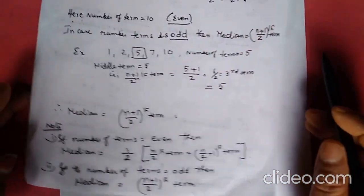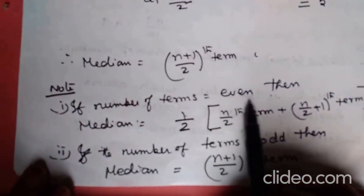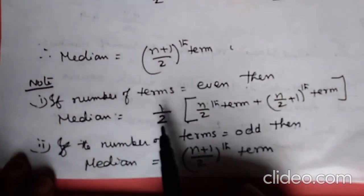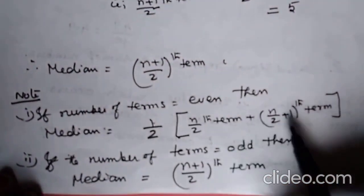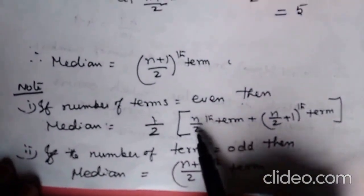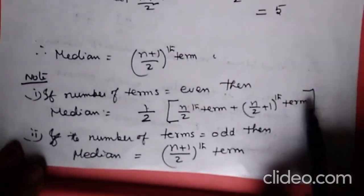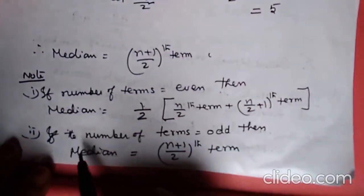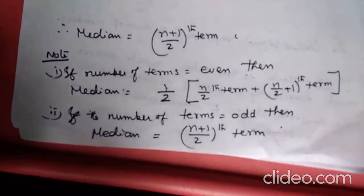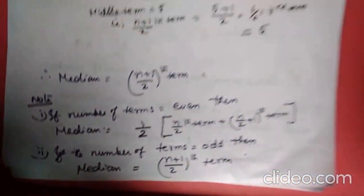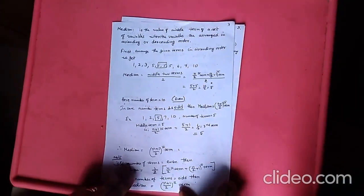Now remember: if the number of terms is even, then the median is half of the (n/2)th term plus the (n/2 + 1)th term — that is, add those two middle terms and divide by 2. If the number of terms is odd, then median is equal to the (n+1)/2 th term.